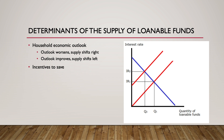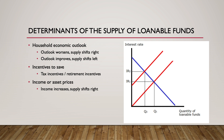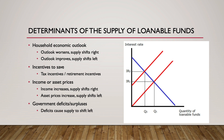Another determinant is the incentives to save. Governments and companies offer various incentives to individuals to encourage saving, such as retirement contribution plans like a 401(k), and other tax incentives. Another factor is income or asset prices. As incomes rise, people save larger proportions of their incomes. Asset prices work in the opposite direction: as home values appreciate and stock values increase, people feel wealthier and spend more and save less. Government deficits and surpluses have an impact on the supply curve as well. When governments engage in deficit spending, individuals and institutions buy up government bonds using their savings, which decreases the supply of loanable funds. When governments run budget surpluses, this increases the supply of loanable funds as governments buy back bonds and the general public has more money to save.